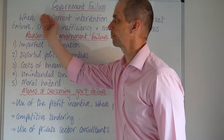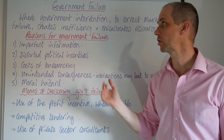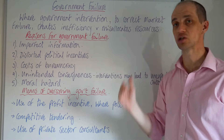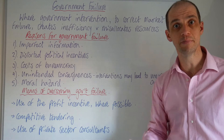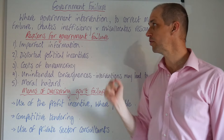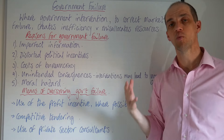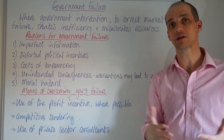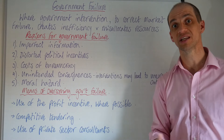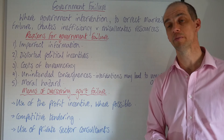Government failure is where government intervention to correct market failure actually creates inefficiency and misallocates resources. There are a number of reasons for why this may occur — in a nutshell, the government is making things worse rather than better.